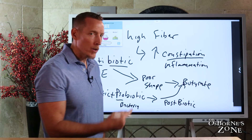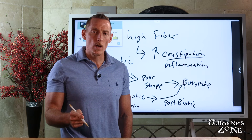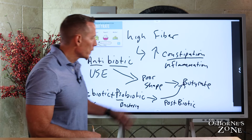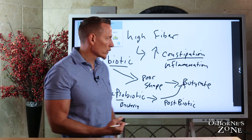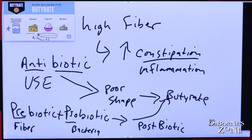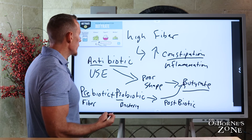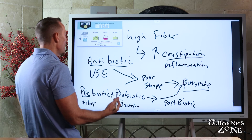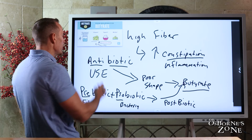If you can't get to butyrate, you increase the risk of leaky gut, autoimmune problems, weight gain, certain intestinal cancers, and insulin resistance, which leads to cardiovascular risks. You need butyrate — it's an important substance for overall gut integrity and health. If you've got an antibiotic history, or if you're not drinking filtered water, remember that chlorine in drinking water acts as a naturally occurring antibiotic.